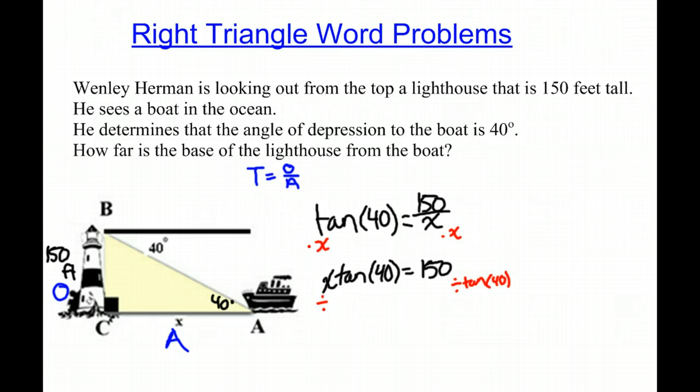And if we divide both sides by tangent of 40, we are left with x on one side and 150 divided by tangent of 40 on the other. Now using a calculator,